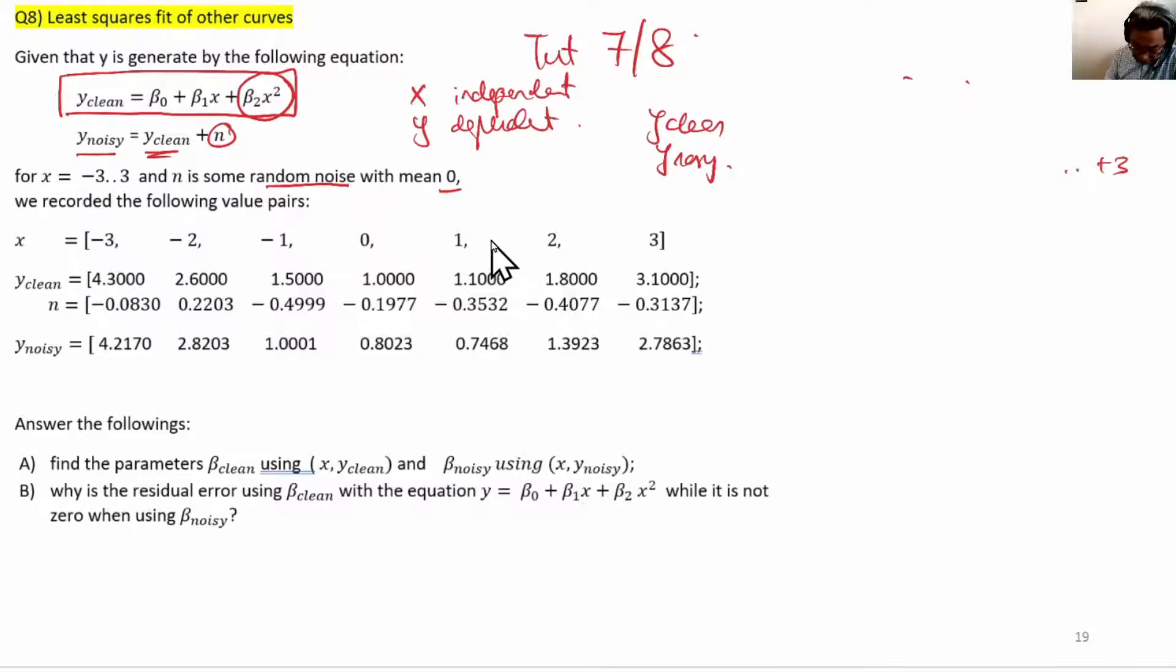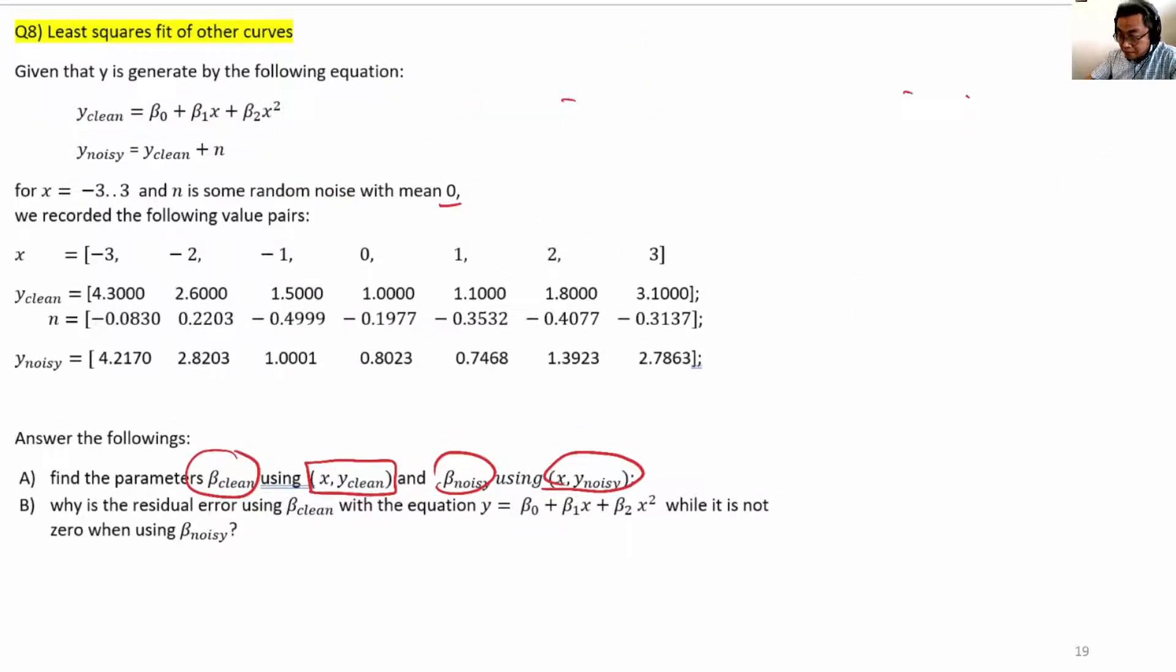The question asks us to find β_clean using x and y_clean, and β_noisy using x and y_noisy. Let us see how we're going to do it. The theory is like this: generate your data or design matrix with three columns—seven ones for representing the seven entries.